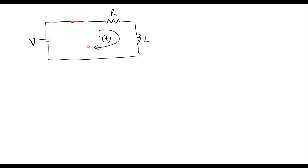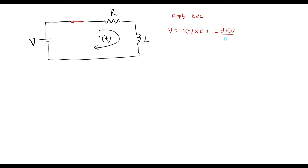Now let me apply KVL to this circuit. Applying KVL, V is equal to I of t into R plus the voltage across the inductor, which is L di of t by dt.